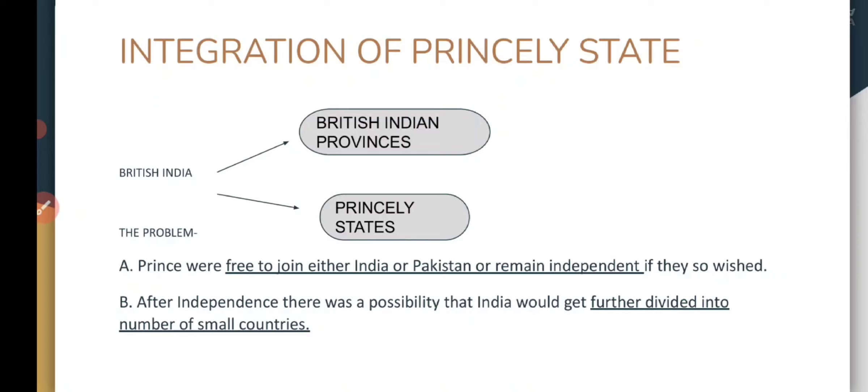When India got independence, there were totally 565 princely states. These were divided into two parts: one was directly under British Indian control and the second was indirectly controlled. The princes who were under British supremacy, their governance was guided according to their province.